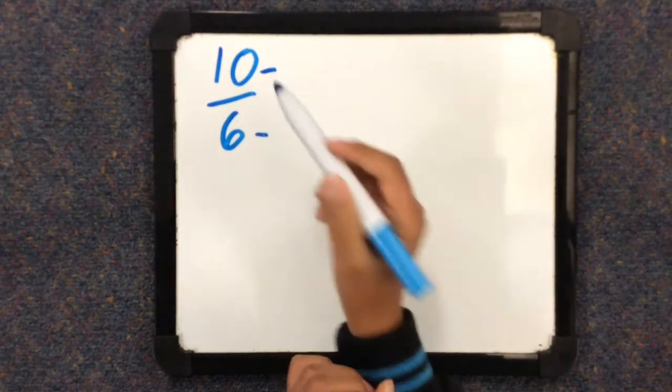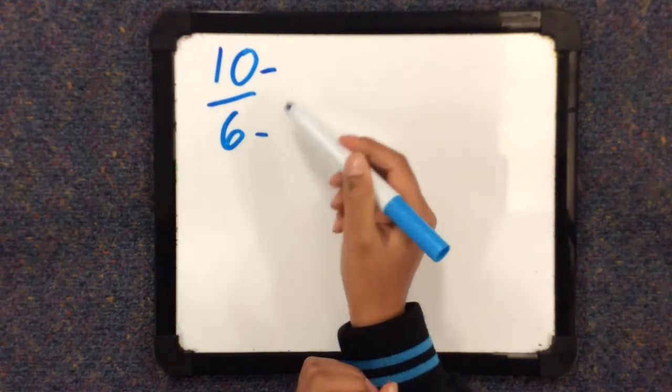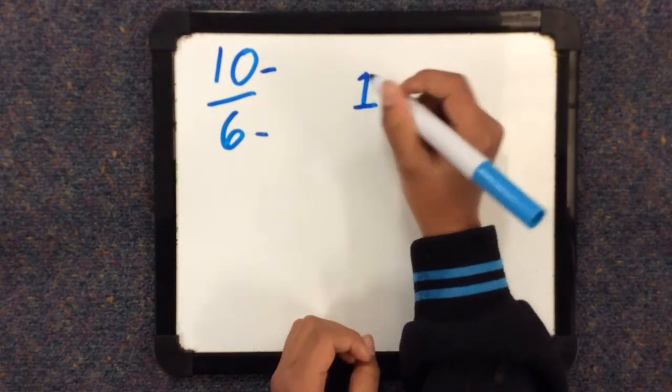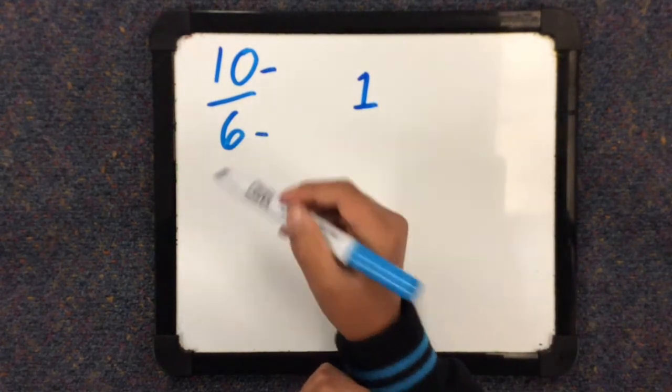Now since the numerator is bigger than the denominator and it should be the opposite, we're going to put a 1 here since it has already reached the 6 over 6.